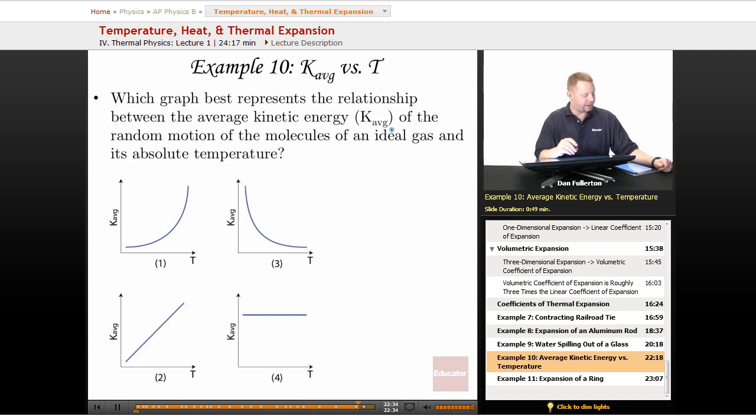Well, first of all, let's write down that relation. The average kinetic energy is 3 halves, Boltzmann's constant, times T. Notice that we have a direct linear relationship between the average kinetic energy and the temperature.